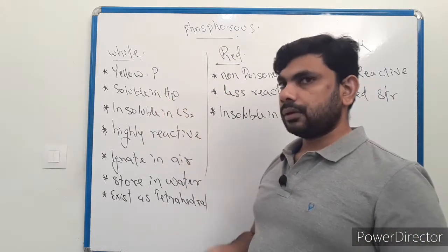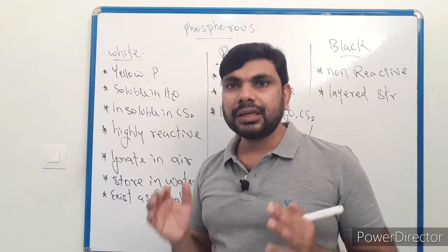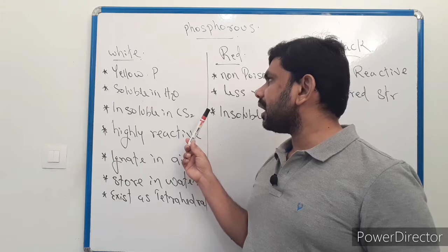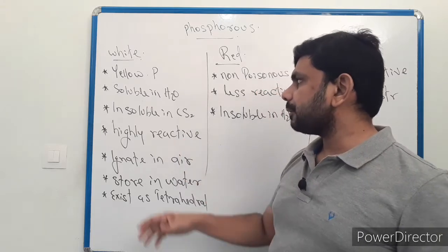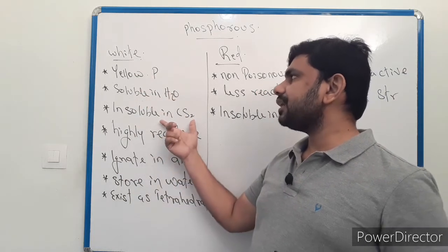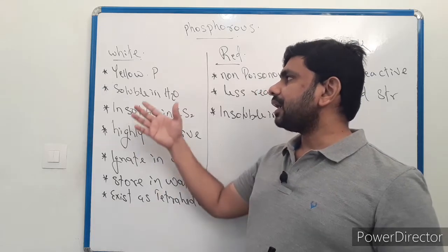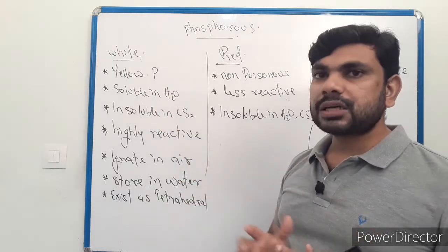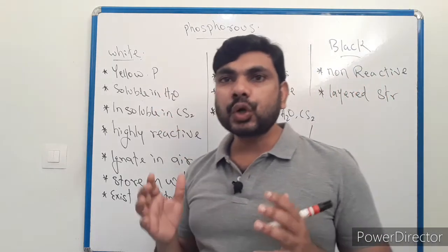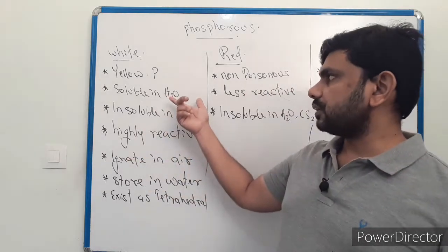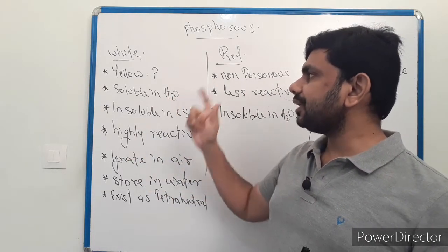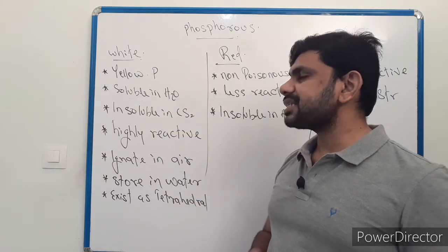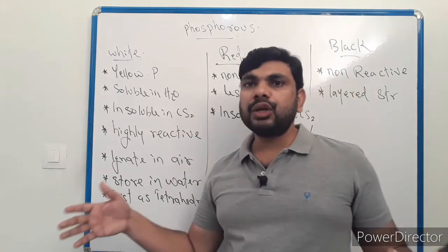White phosphorus is also called yellow phosphorus. White phosphorus is insoluble in carbon disulfide, but it is soluble in water.